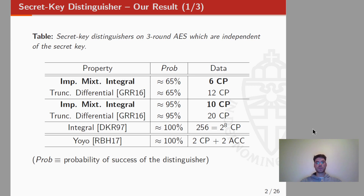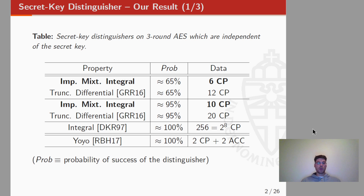We think that the most important result of our paper is a new secret-key distinguisher for three rounds of AES, which is independent of the secret key. We call this distinguisher an impossible mixture-integral distinguisher. "Integral" because we use a zero-sum property. "Mixture" because the starting point is the mixture-differential distinguisher proposed at FSE 2019. And "impossible" because the property we exploit holds with probability zero for the case of three rounds of AES.